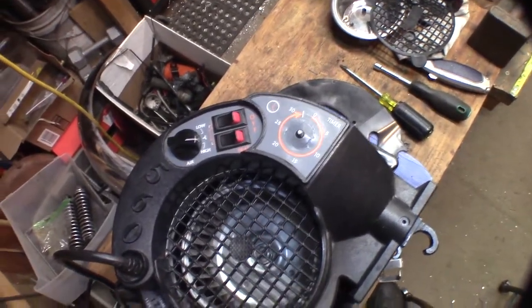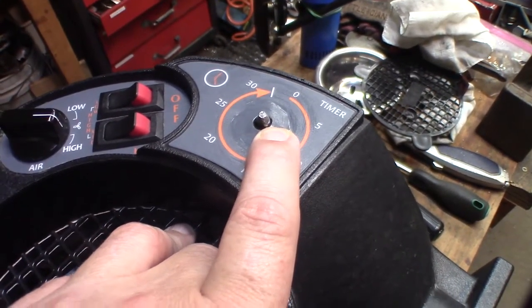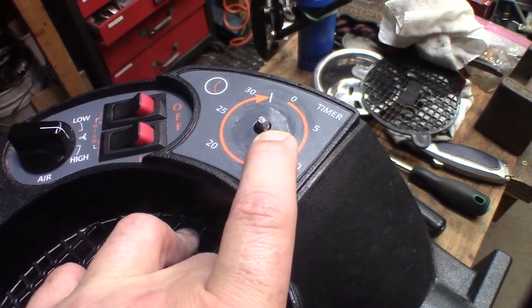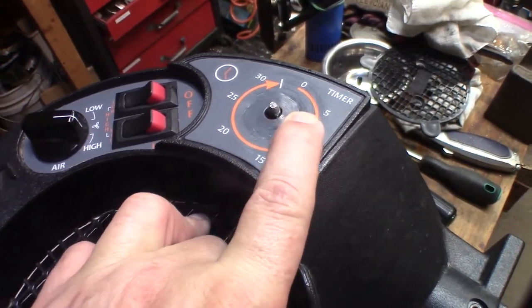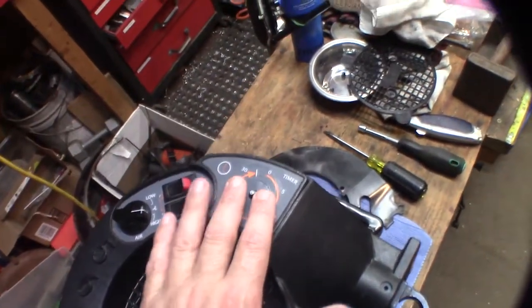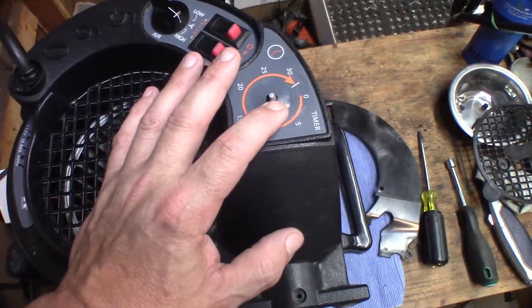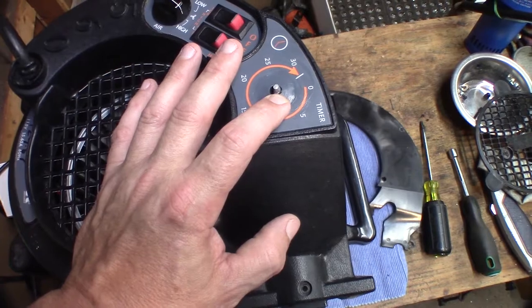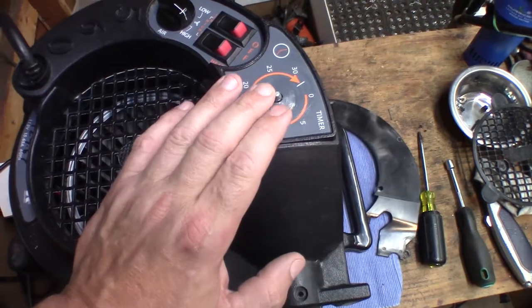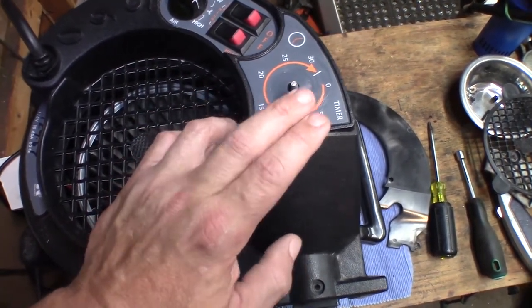As you can see here, the knob fell off at some point and the girls that were using it just started using a pair of pliers on it and have ground it down to a nub. So I'm going to try to figure out what I can do with this timer bit. The rest of it's in good shape. Not sure if we're going to be able to just replace this timer unit or have to modify it to where it's not a timer unit anymore, maybe just a switch or something.